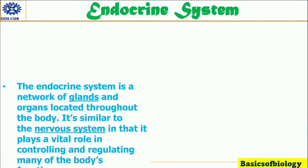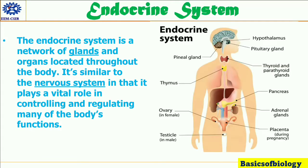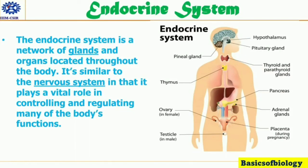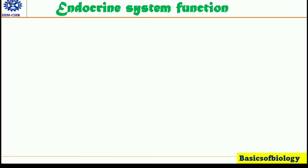In this video we will discuss the endocrine system, what it is and how it functions. The endocrine system is a network of glands and organs located throughout the body. It is similar to the nervous system in that it plays a vital role in controlling and regulating many of the body's functions. However, while the nervous system uses nerve impulses and neurotransmitters for communication, the endocrine system uses chemical messengers called hormones.